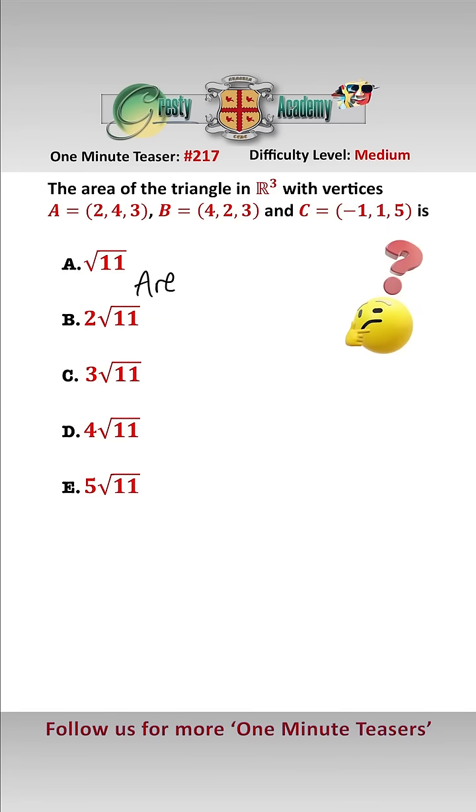To solve this we're going to use the formula area equals half AB cross AC. So AB, which is equal to vector B minus vector A, equals (2, -2, 0).